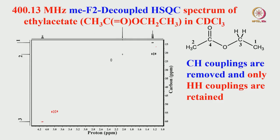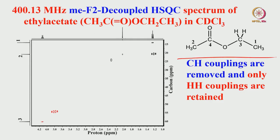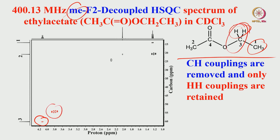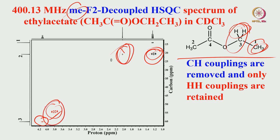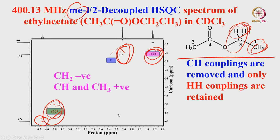In the basic 2D HSQC, all cross peaks are in phase and positive. With the multiplicity-edited HSQC of ethyl acetate: the CH2 group appears with negative intensity (red), while both CH3 groups appear with positive intensity (black). This allows easy identification of CH2 carbons just by examining the sign of the cross peaks in the 2D spectrum.